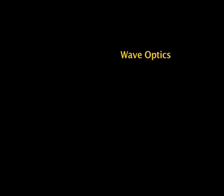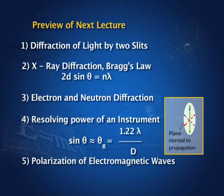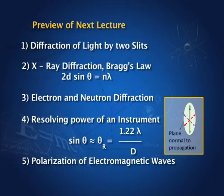In this lecture, we have seen that when light passes through a very sharp edge or through a narrow opening or slit whose width is of the same order as the wavelength, you have a diffraction pattern. We will continue with diffraction by two slits in the next lecture. We shall also consider diffraction at other wavelengths such as X-rays, neutrons, and electrons, and we shall define what is known as the resolving power of an instrument, before going on to polarization of electromagnetic waves.